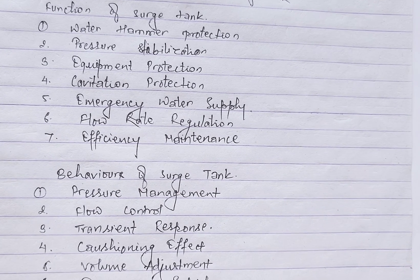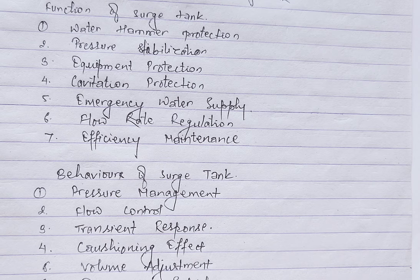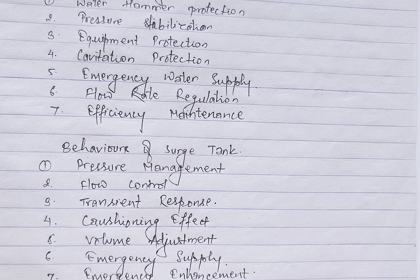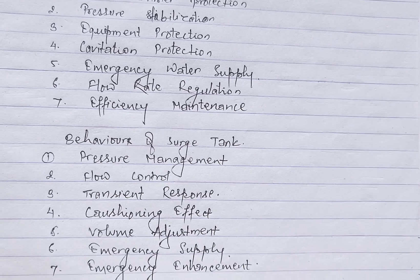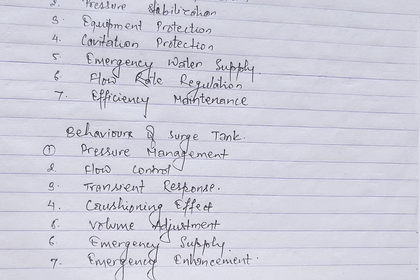Next is volume adjustment: source tanks allow for the temporary storage or release of fluid with adjustable volume to suit system dynamics. In terms of emergency supply, the source tank serves as an emergency reservoir, ensuring a temporary water supply during peak demand or interruptions. Finally, efficiency enhancement: by preventing water hammer and stabilizing pressure, source tanks contribute to overall system efficiency and stabilization.